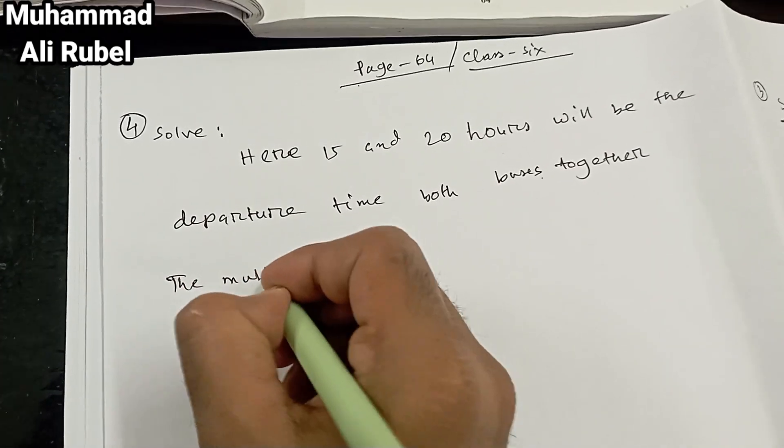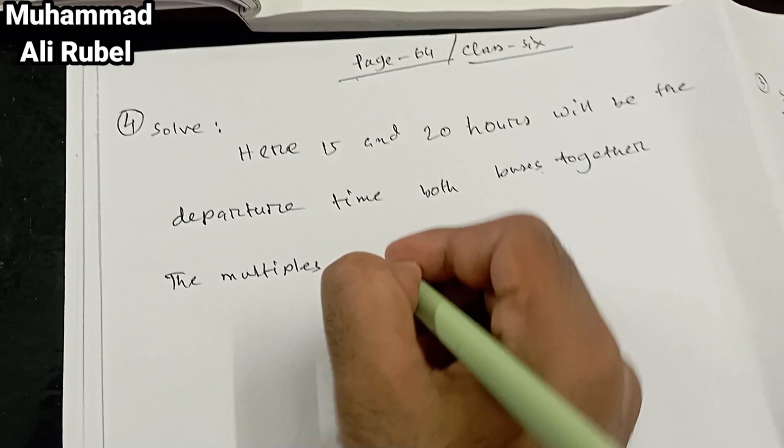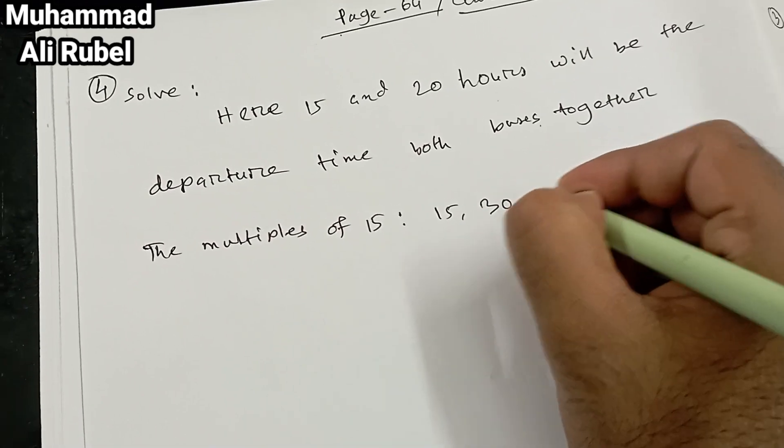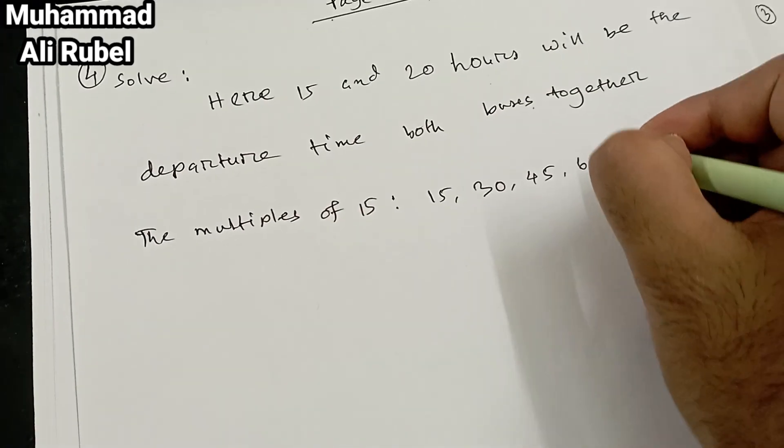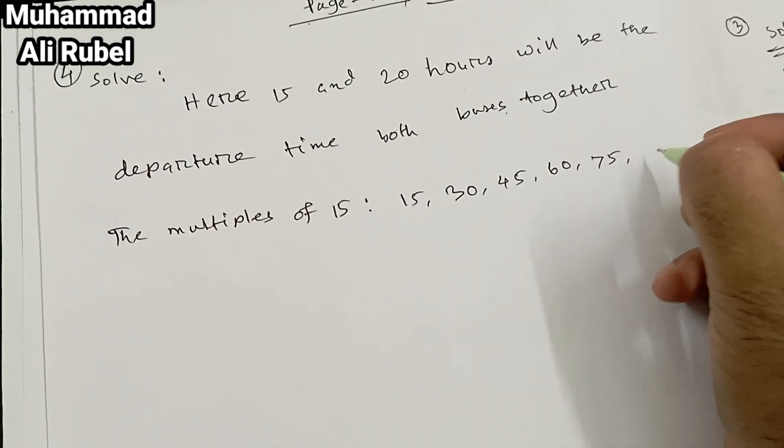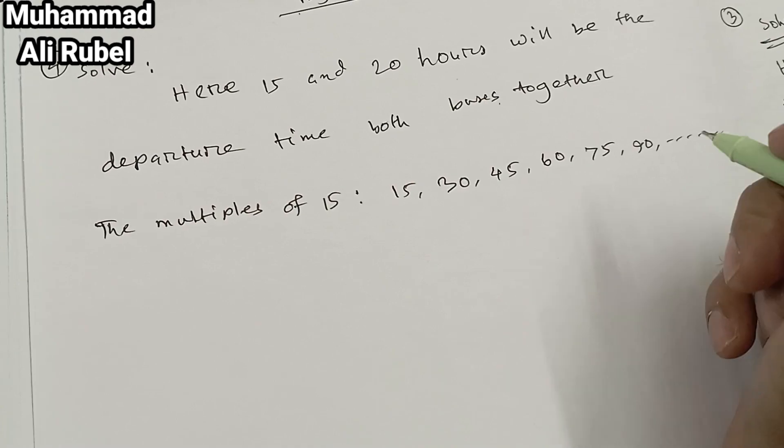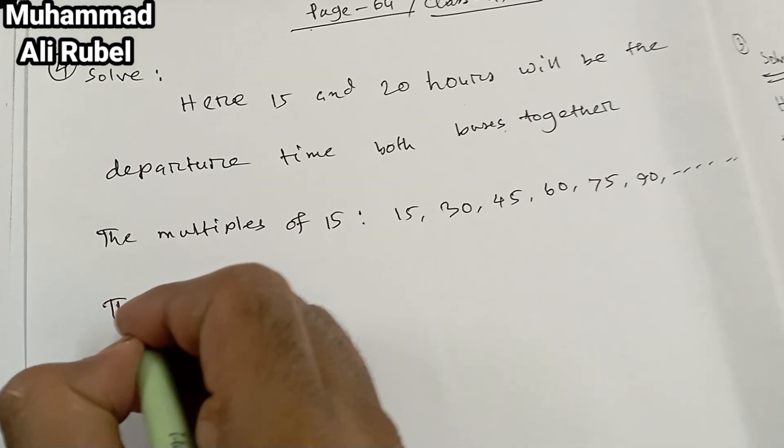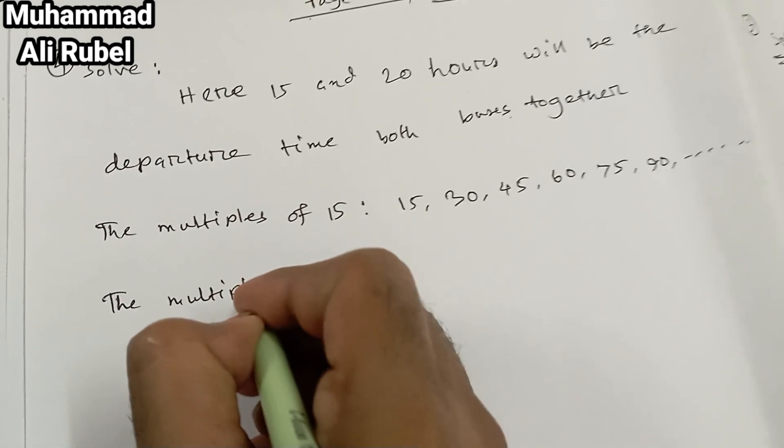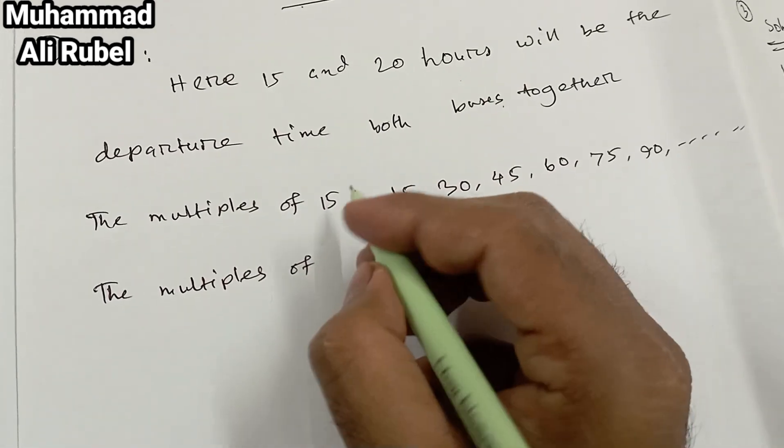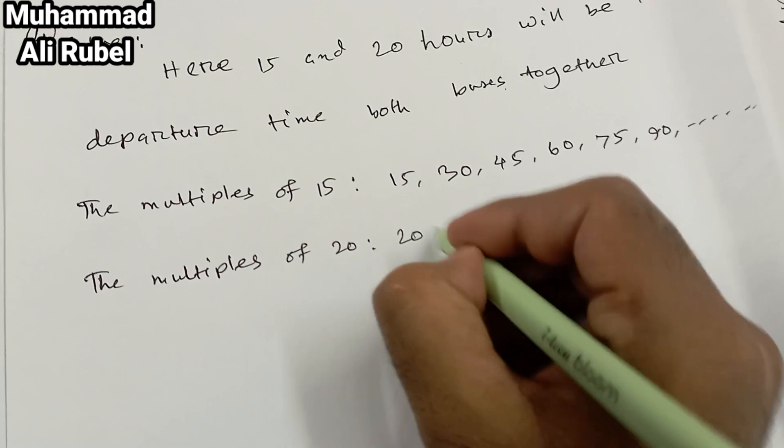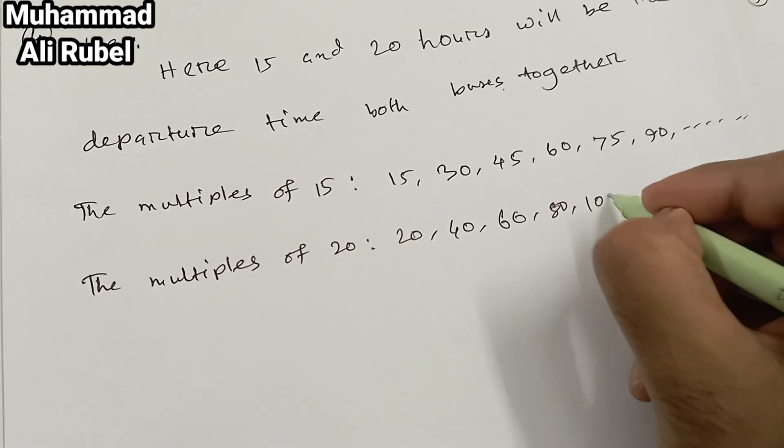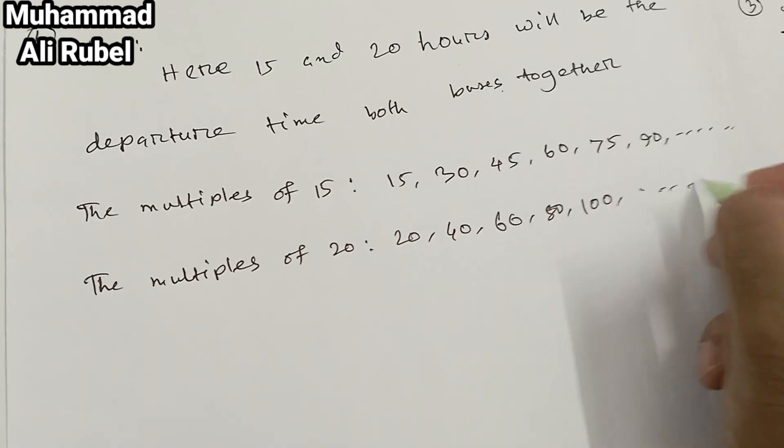The multiples of 15: 15, 30, 45, 60, 75, 90, and so on to infinity. The multiples of 20: 20, 40, 60, 80, 100, and so on.